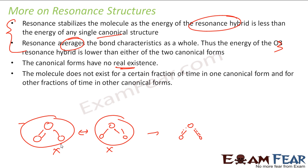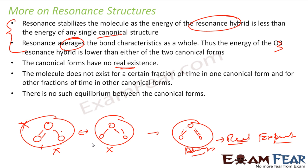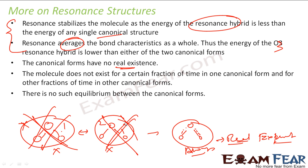It is not that the molecule exists in one canonical form for one second and the other form the next second — that concept is wrong. It doesn't keep swapping. The molecule is always in the resonance structure — always. This is the real, experimental structure. There is no equilibrium between the forms either. Some students think the shape moves from shape one to shape two — nothing like that exists. Shape one and shape two don't exist in reality at all. Don't get confused.